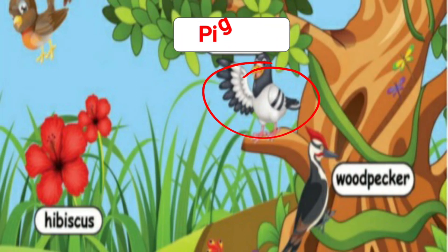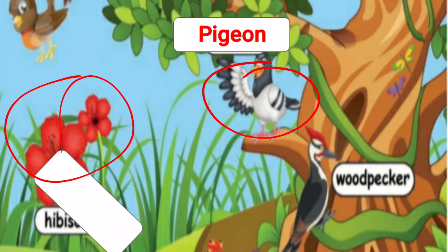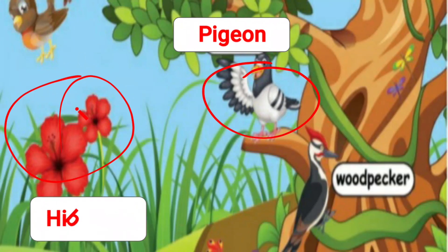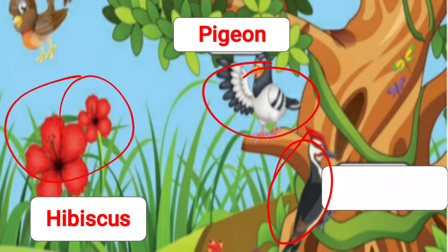P-I-G-E-O-N. And what is this? This is a hibiscus. H-I-B-I-S-C-U-S. Hibiscus. And what is this? This is a woodpecker. W-O-O-D-P-E-C-K-E-R. Woodpecker.